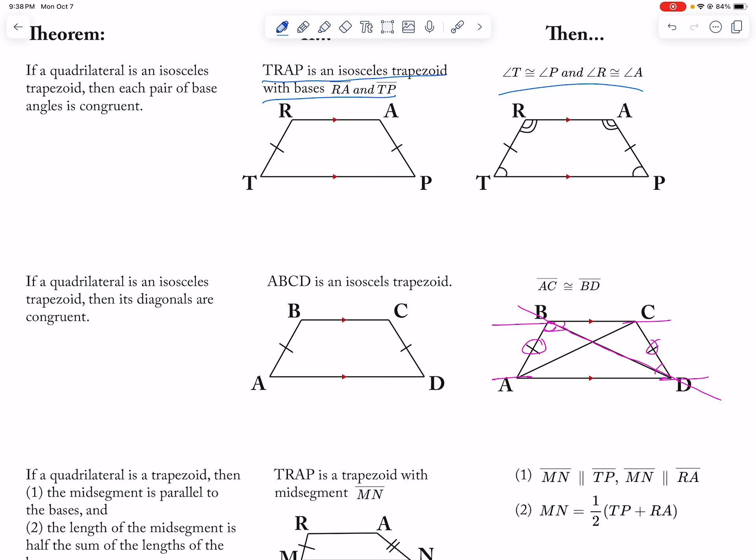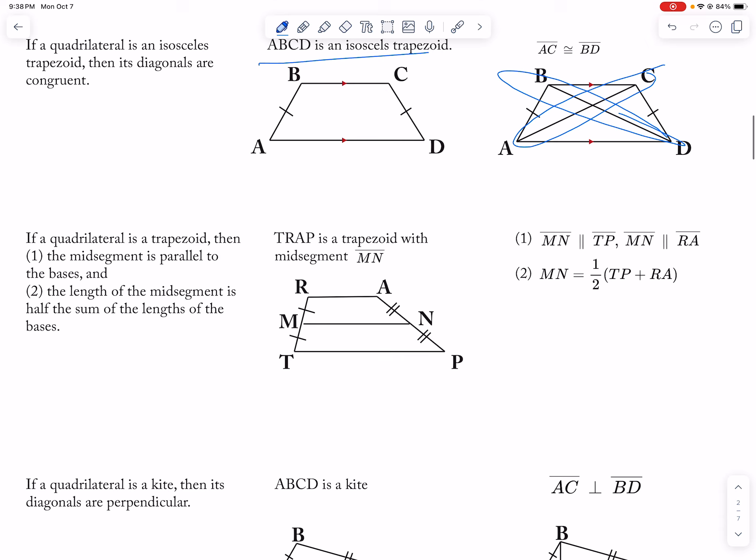Again here, I don't know why this is all colored. Isosceles trapezoid and the diagonals are equal to each other. And then the mid-segment, that goes back to your mid-segment theorem that we did before. But now it's only different because now you have the addition of side lengths. So it is RA plus TP gives you MN when you divide it by two.